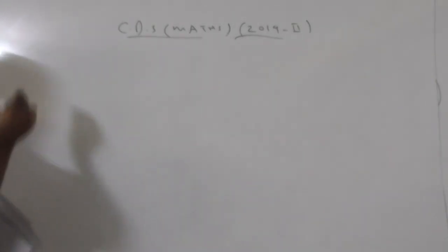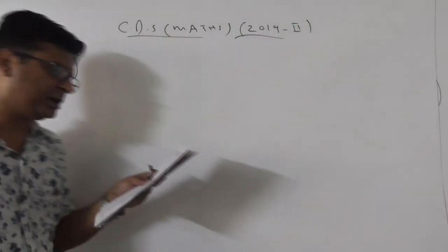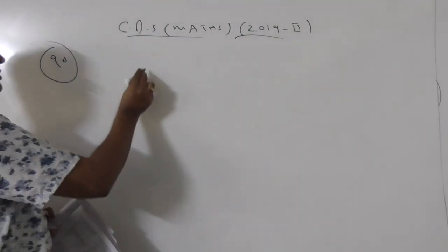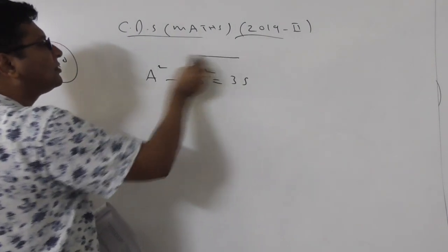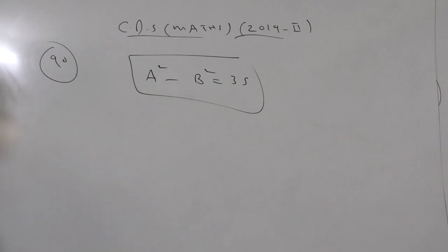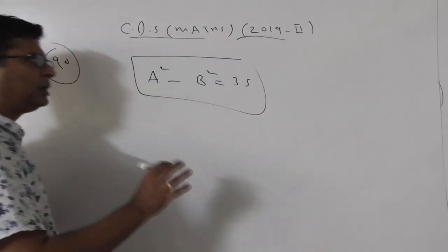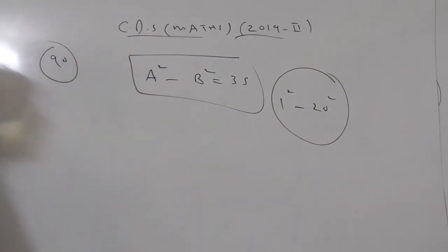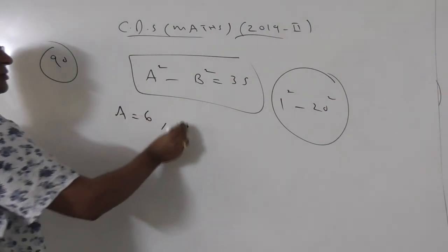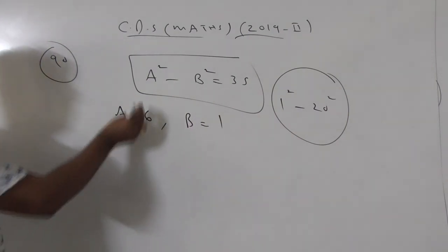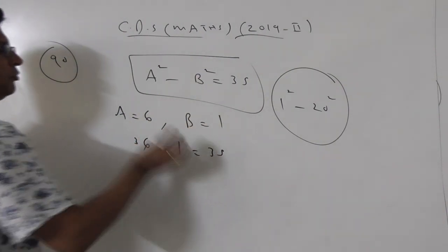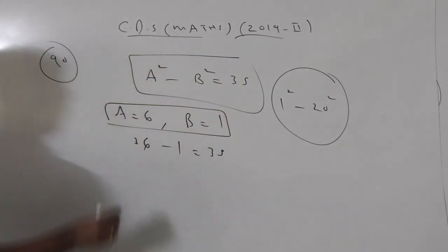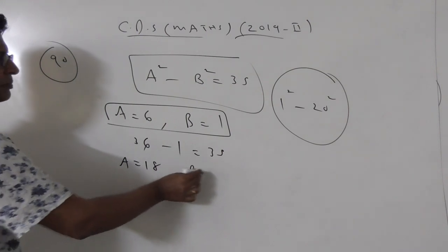The next question requires critical thinking: how many pairs of natural numbers are there such that the difference of their squares is 35? You need to remember squares from 1 to 20. For example, if a = 6 and b = 1: 6² - 1² = 36 - 1 = 35. That's one pair. Another pair: a = 18 and b = 17: 18² - 17² = 324 - 289 = 35. That's another pair.